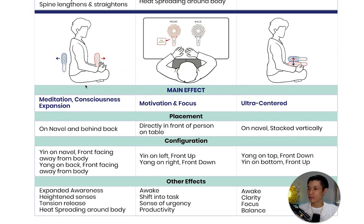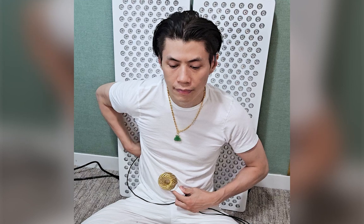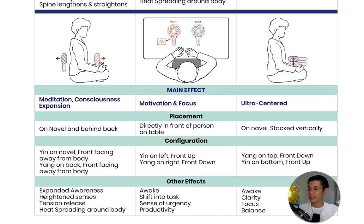The next configuration is for meditation and consciousness expansion, which is great when you want to achieve higher and deeper levels of meditation. Place the yang coil behind you and the yin coil in front of you — both with the front facing away from your body. Other effects you will feel include expanded awareness, heightened senses, tension release, and heat spreading around your body.